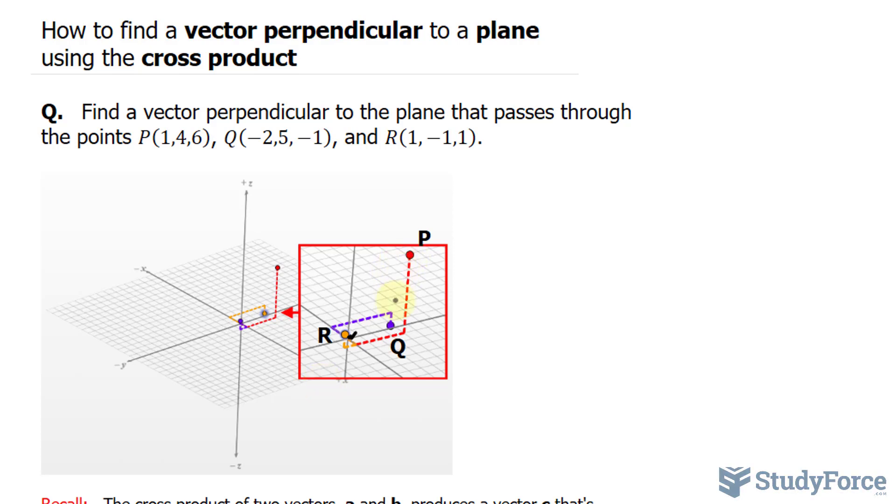If I want to find the vector connecting P to Q, I can write it out as PQ with an arrow, equal to the coordinates of P subtracted by the coordinates of Q. So 1 minus negative 2, that's 3.